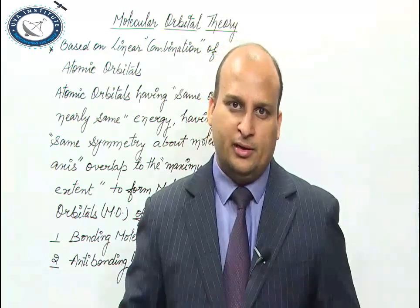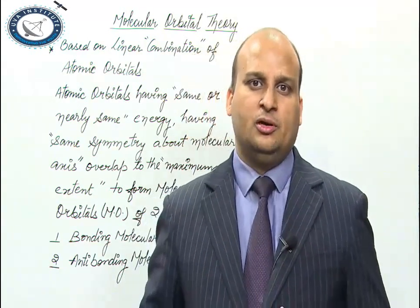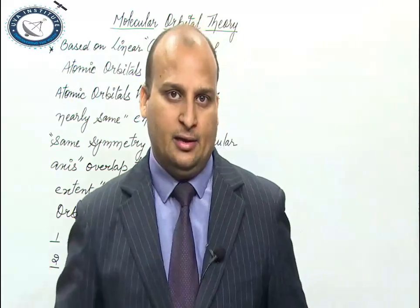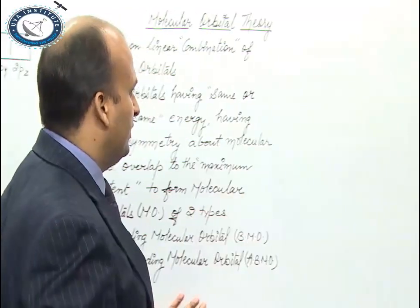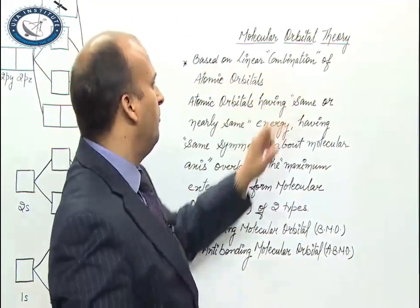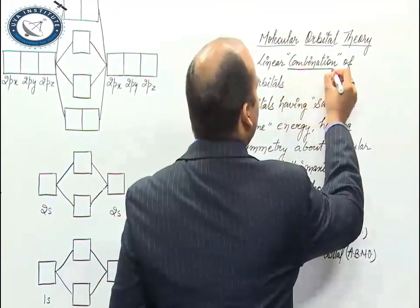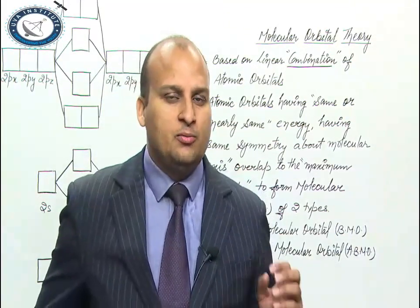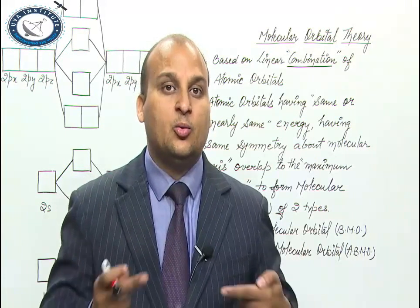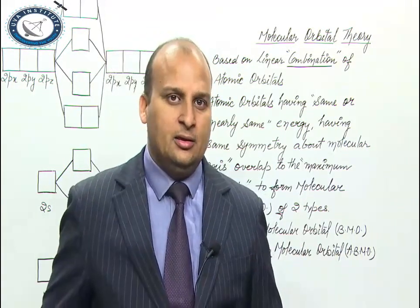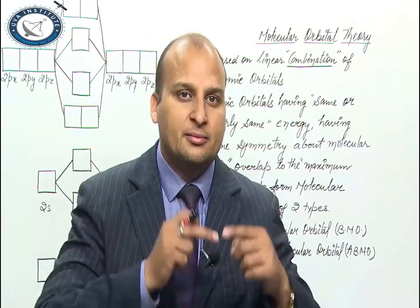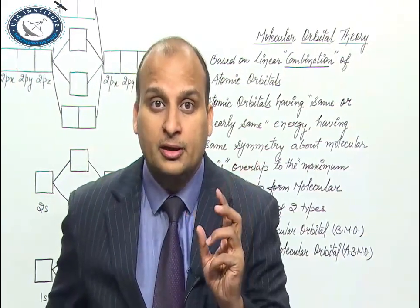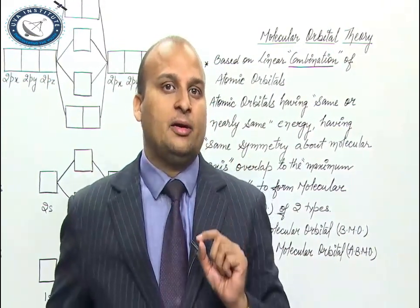What is molecular orbital theory? It is very simple — please remember to note every single point that I am saying, because it is written in your exam. Molecular orbital theory is based on linear combination of atomic orbitals. When we talked about valence bond theory, we said atomic orbitals overlap. In hybridization, atomic orbitals intermix. In molecular orbital theory, the word used is combination — we are combining the atomic orbitals.